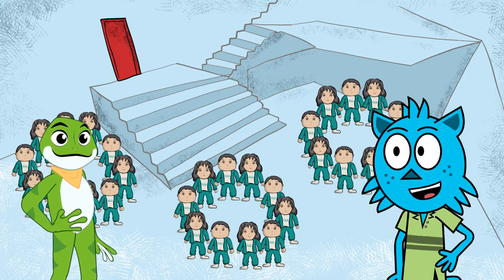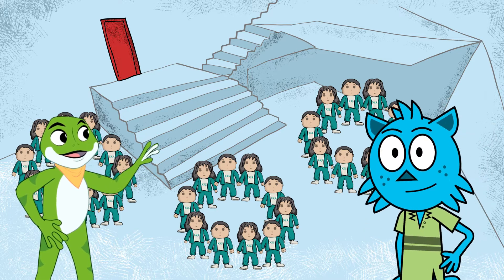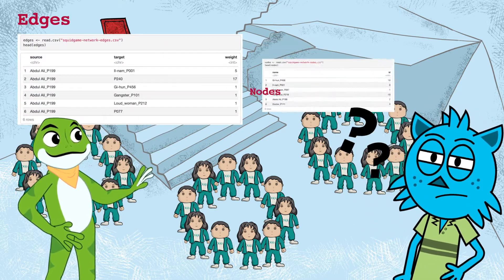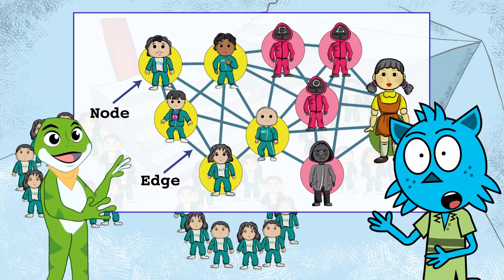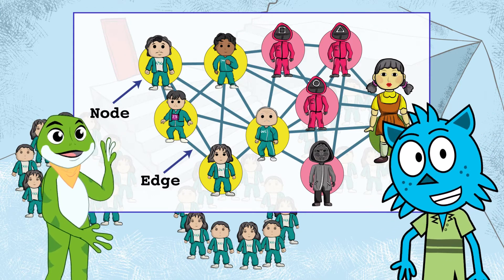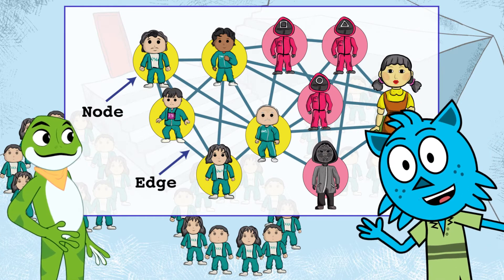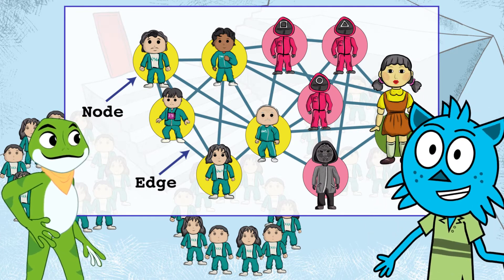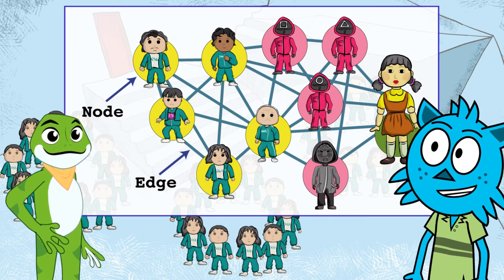Now you can bring in your dataset, Zippy. We have two datasets: one for the edges and another for the nodes. Each node is a player, and the edge represents whether players appear together in a scene. Players that appear together more frequently have more chances of communicating and therefore are more likely to choose each other as teammates in the tug of war game.